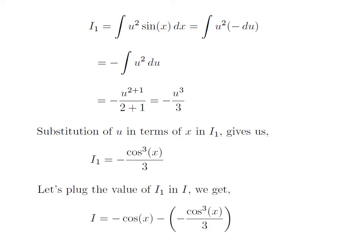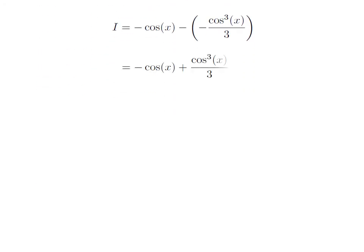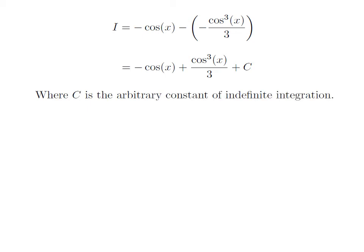Now plugging the value of I1 into integral i, i — the integration of sin³(x) — is equal to -cos(x) minus (-cos³(x)/3). Expanding the bracket, the integral i equals -cos(x) + cos³(x)/3. Then we add capital C, the arbitrary constant of indefinite integration. Do not forget to add this constant at the end of any indefinite integration.